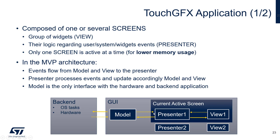Regarding event flow: if something happens on the backend, the model is notified and does not update the view directly — it first tells the active presenter that something happened, and then the presenter, depending on the current active screen status, notifies the view to refresh part of the display or to hide/act on the view. The same applies in the other direction: when something happens on the view (a user interaction), it does not act directly on the model — it goes first to the presenter which processes the event and updates the model and view accordingly. The model is the only interface with the hardware and backend application.